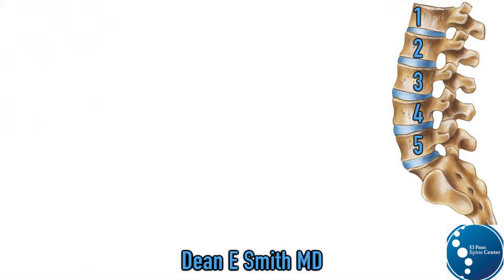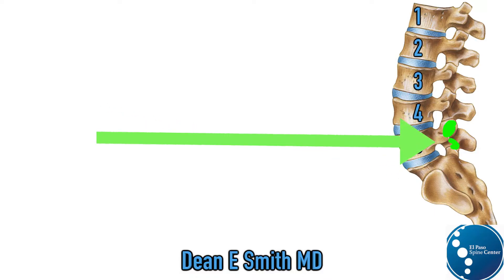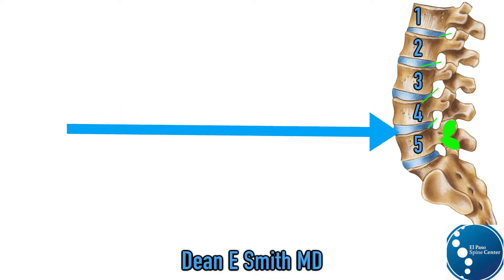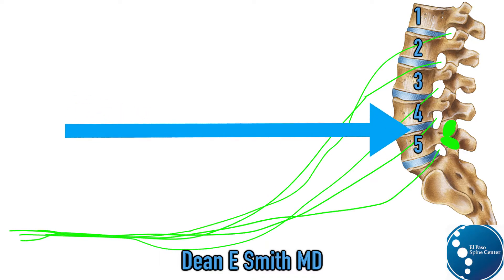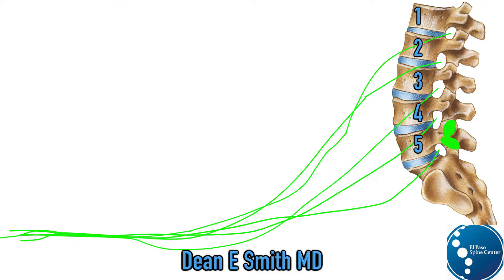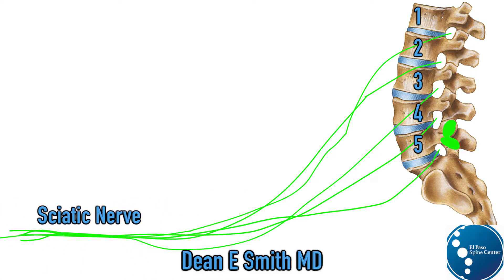The lower back or lumbar spine is composed of five vertebral bodies. Each of these bones gives off two processes that go up and two processes that go down. Each bone is separated from the other by a disc, and at each level a nerve is given off, all of which join in the buttock to form a larger nerve known as the sciatic nerve.